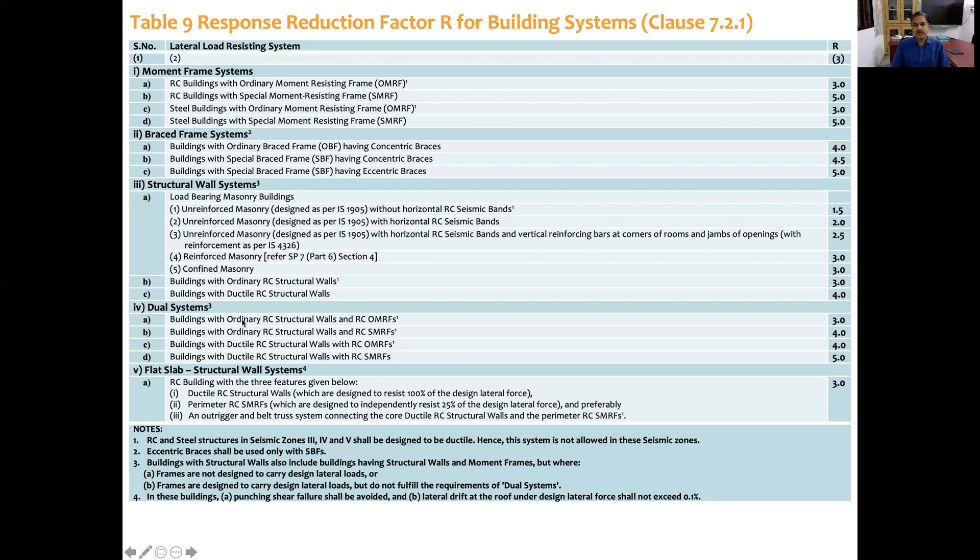In dual systems, there are two things: ordinary RC structural walls and ordinary moment resisting frame, for that code allows 3 as a response reduction factor. But if one of these two is special moment resisting frame or ductile structural wall, code specifies value of 4. And for both, ductile RC wall with special moment resisting frame, code recommends response reduction factor as 5.